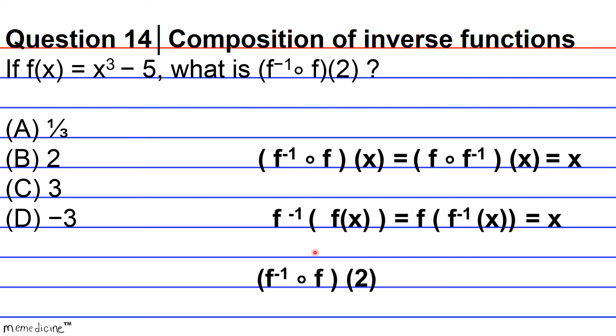Now to evaluate f inverse of f of 2. Well, if you commit to memory that these functions undo each other, that means you would just be left over with the input value, and instead of evaluating the function by first finding f inverse of x, and then actually plugging 2 in to evaluate the composition of function, you would just know that these cancel each other out, and you end up with 2.